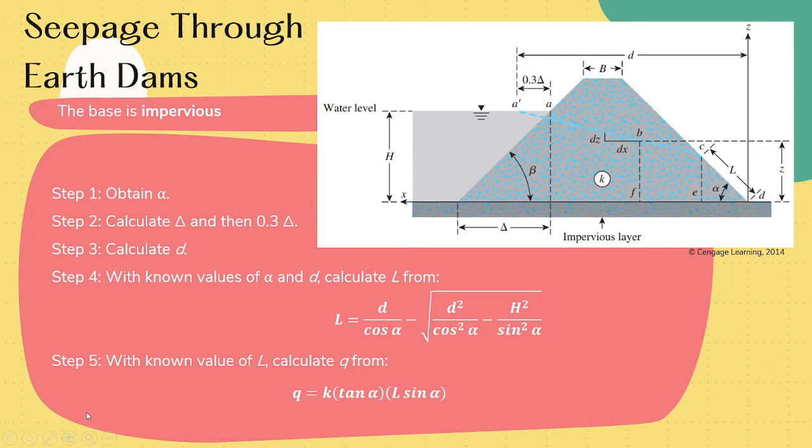And then with the known value of L, we can now calculate q or the seepage. So that is the hydraulic conductivity times tangent alpha times the length L times sine alpha.